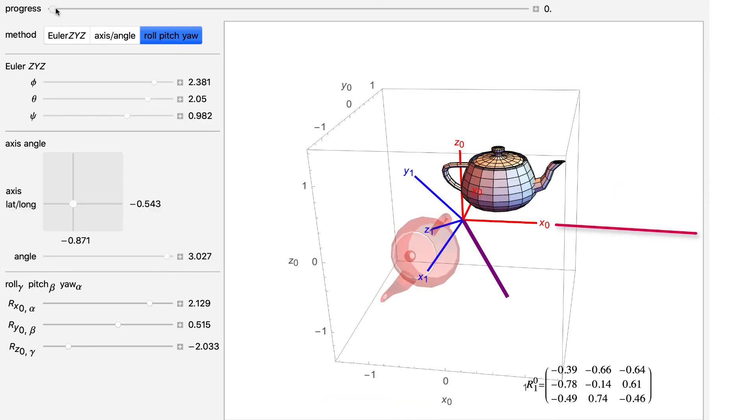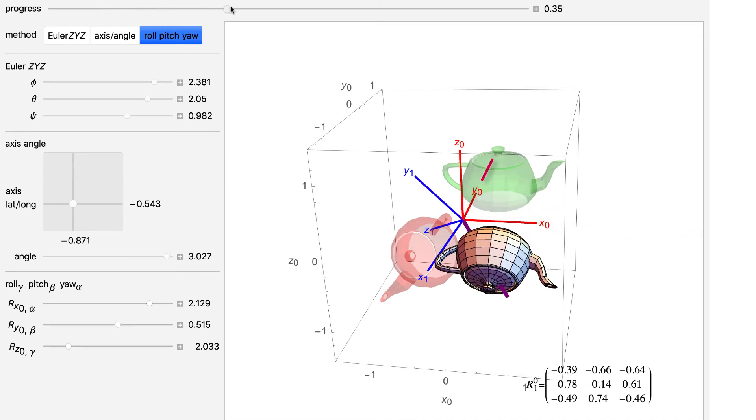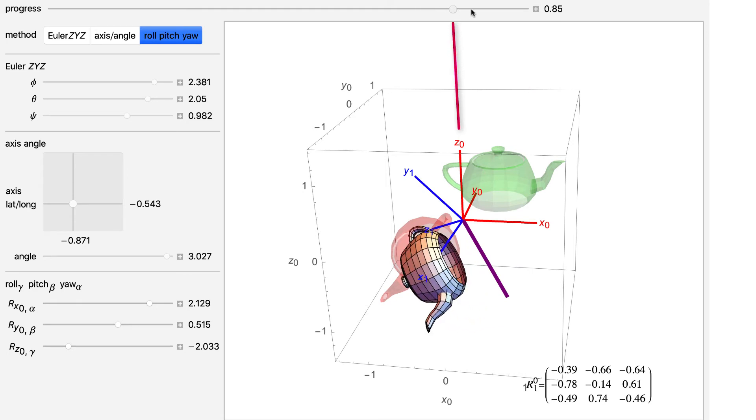So first, a yaw about x0 through an angle alpha. Second, a pitch about y0, that's the world y-coordinate frame, by an angle beta. And third, a roll about z0 by an angle gamma.